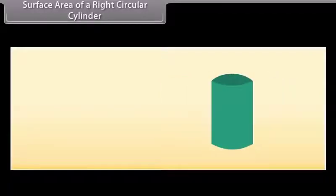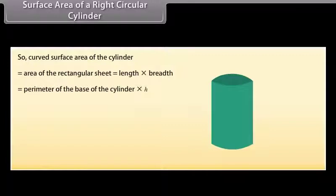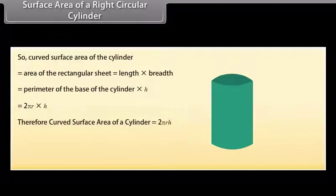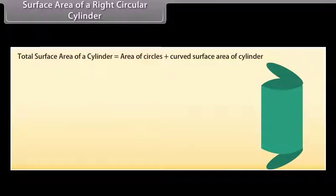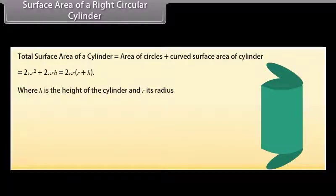We get the curved surface area of a cylinder by rolling a sheet of paper. The curved surface area of the cylinder equals the area of that rectangular sheet, which is length × breadth = perimeter of the base × height = 2πr × h. If we also cover the top and bottom, total surface area = 2πr² + 2πrh = 2πr(r + h), where h is the height and r is the radius.